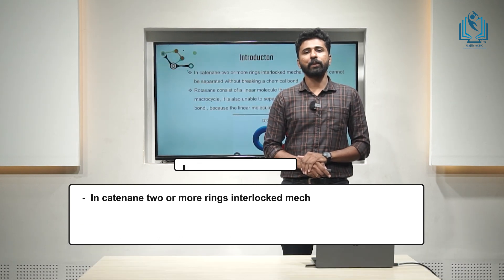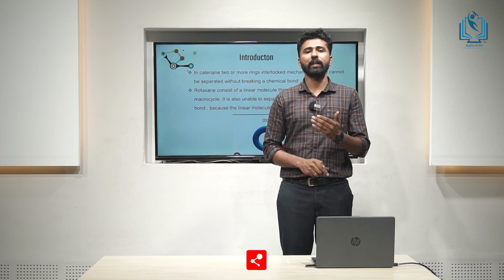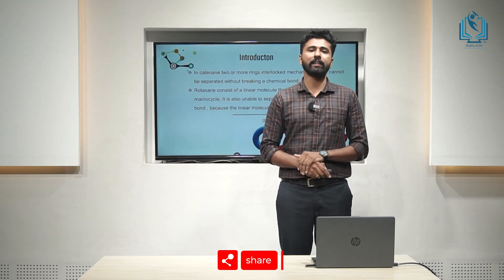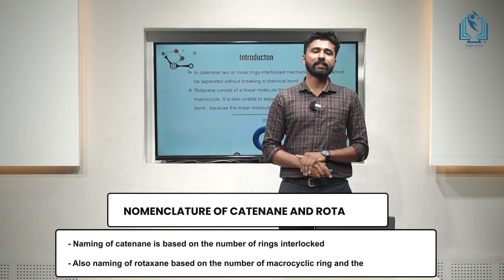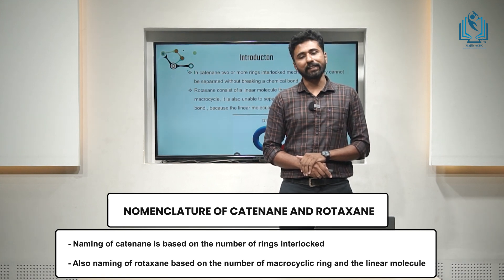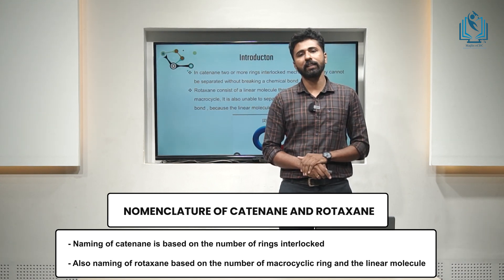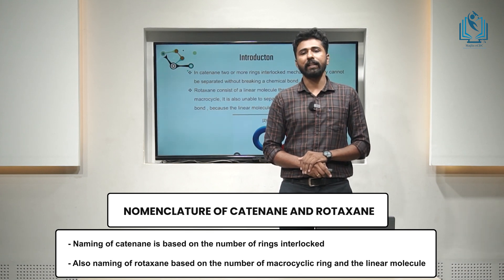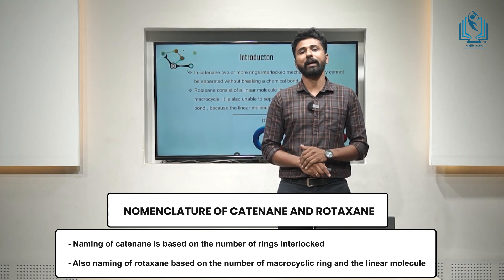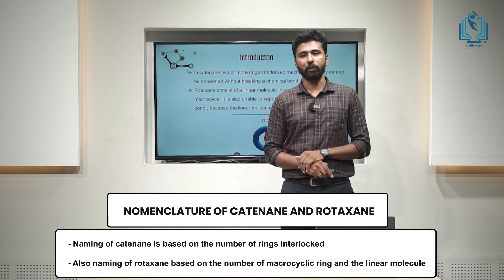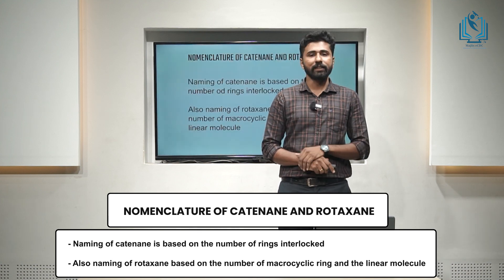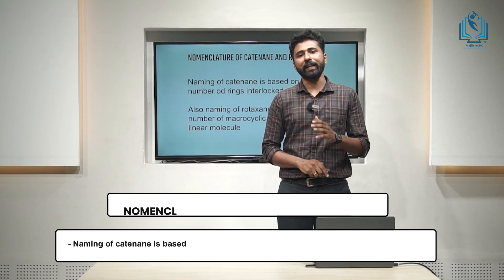Next, we could discuss how we could name rotaxane and catenanes. In the case of catenanes, the naming basically depends on the number of macrocyclic rings. In rotaxane, the naming depends on the number of macrocyclic rings and also the dumbbell-shaped molecule. For explaining this, we could take some examples.